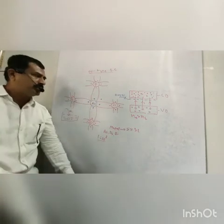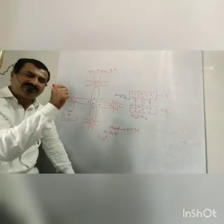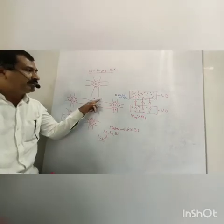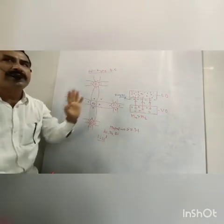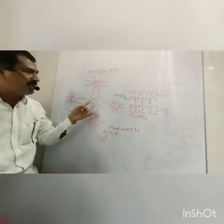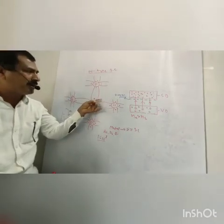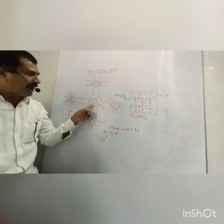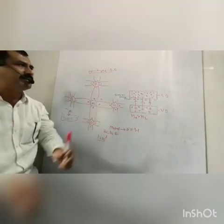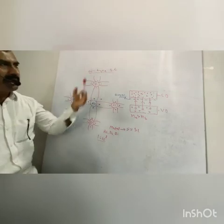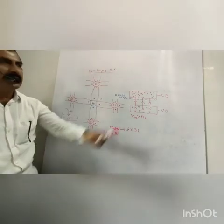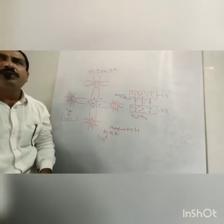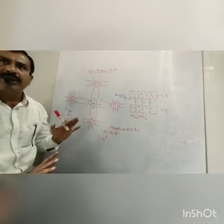Even in an extrinsic semiconductor with a small electric field, even at near zero temperature, this free electron is lifted to the conduction band. For every arsenic atom, one electron enters the conduction band. With 10 arsenic atoms there are 10 electrons, and with 1000 arsenic atoms there are 1000 electrons in the conduction band, even at zero temperature.